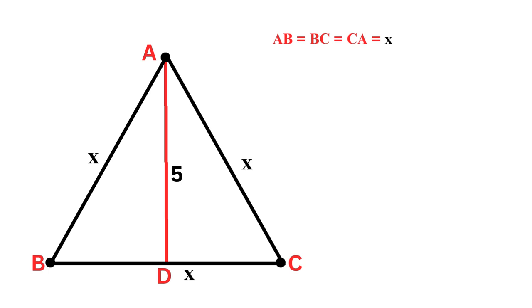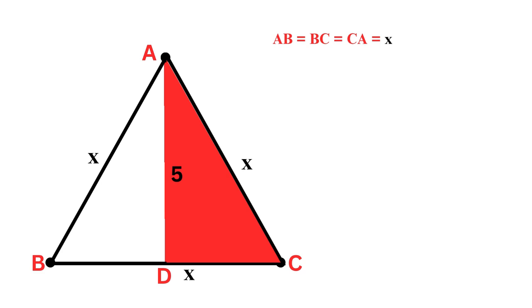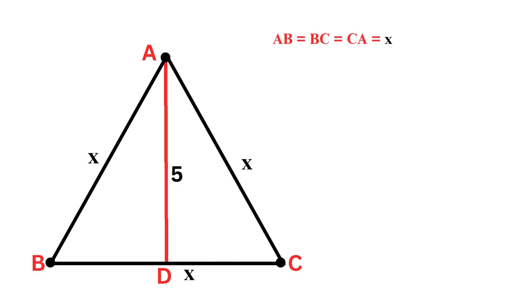Here we have two triangles, ABD and ADC. Now let's look at the right triangle ABD. The angle at vertex B is 60 degrees. The perpendicular side AD is five units, which is the height, and the hypotenuse AB is x units, the side we want to find.